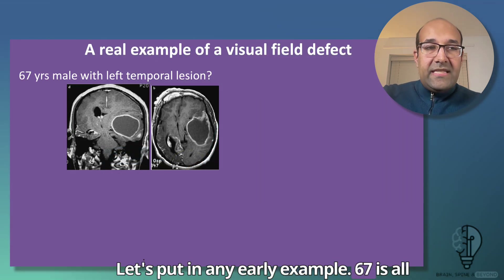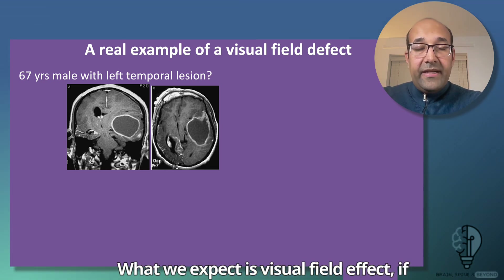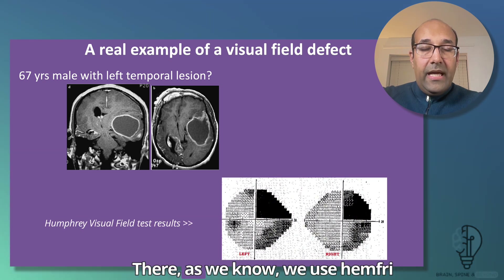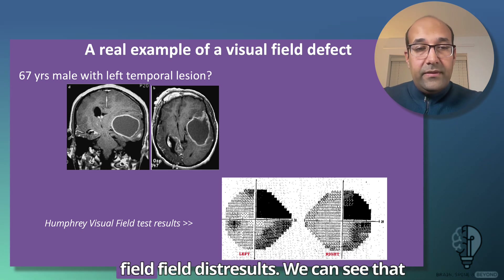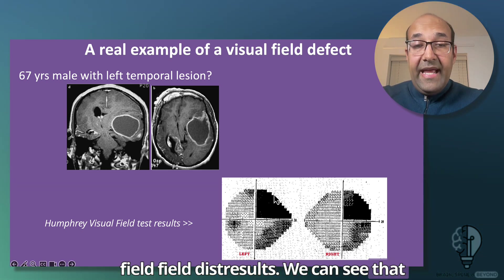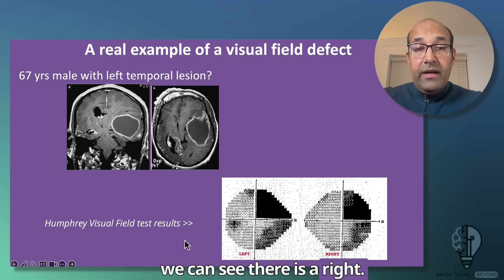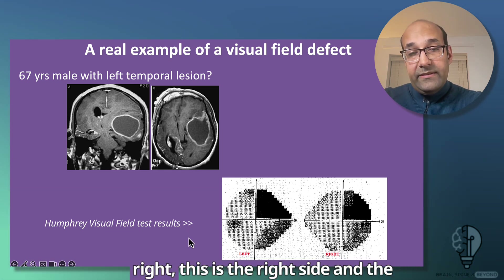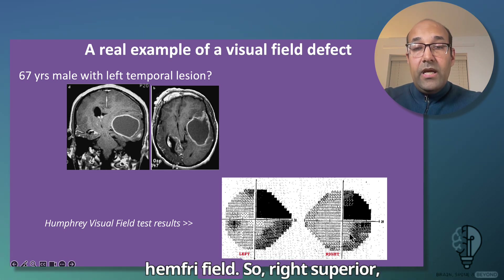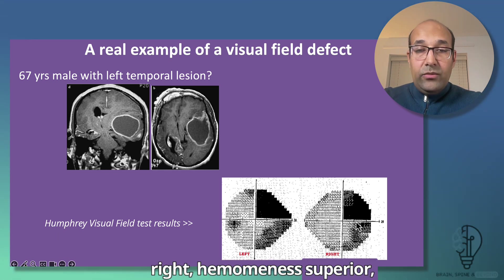Let's apply this to a real example: a 67-year-old with a left temporal lesion — what visual field defect would we expect? On the Humphrey visual field test, the black area represents the defect. With a left temporal lesion, the defect is contralateral — so we see a right homonymous superior quadrantanopia on the right side of the Humphrey field.